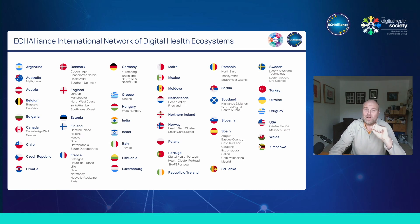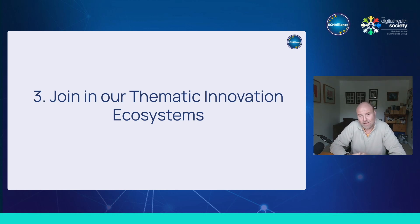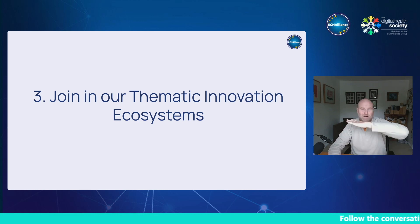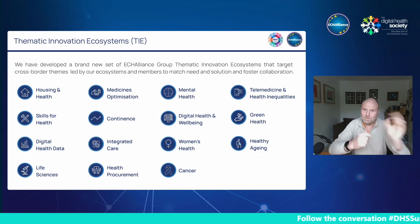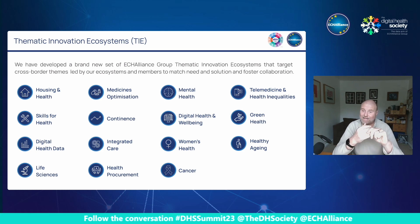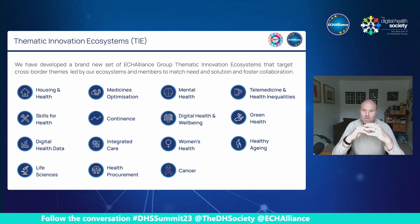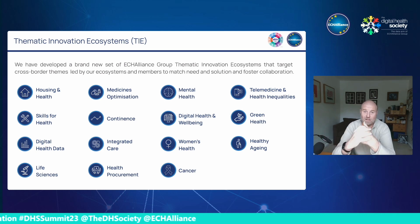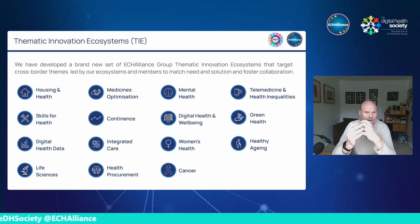Number three: get involved with our thematic innovation ecosystems. These are vertical, cross-border, and mostly online. This year we're focusing with a laser beam on four distinct areas: healthy aging, green health, women's health, and digital health and data. We've already started with the data piece, and Caro is going to be kicking off the green health thematic ecosystem in December.